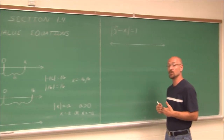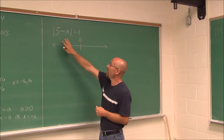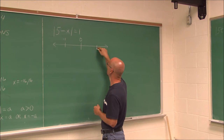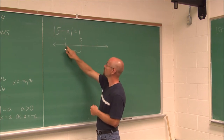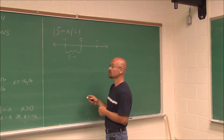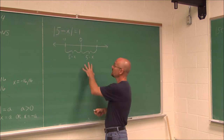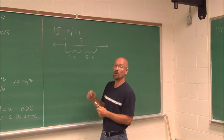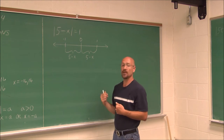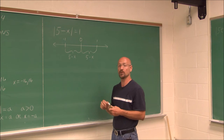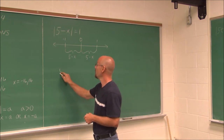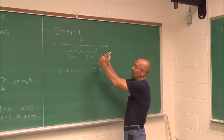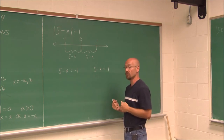All right, let's look at an example. We have the absolute value of 5 minus x equals 1. If we put negative 1 on one side and positive 1 on the other side, the distance is 5 minus x, and that distance will equal 1. So we solve an absolute value equation by writing two separate equations: 5 minus x could equal negative 1, or 5 minus x equals positive 1. We solve them separately, one at a time.